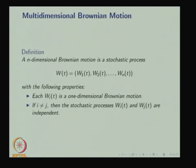We can extend to multi-dimensional Brownian motion. Let W₁ be one Brownian motion, W₂ be another independent Brownian motion, and so on. Collecting these as a vector W(t) = (W₁(t), ..., Wₙ(t)), where each Wᵢ is a one-dimensional Brownian motion and all are independent, gives an n-dimensional Brownian motion.